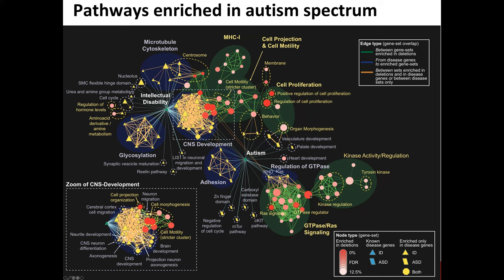Each circle here represents a pathway that's enriched in the autism cases compared to controls. The colors represent the false discovery rate, with lower values being more significant and colored more red. Green lines connect pathways that share genes — you can think of this as pathway crosstalk or redundancy in the pathway databases. All these circles represent pathways that were more enriched in autism cases compared to controls, and there were a lot of interesting pathways — many more information than we had from just looking at individual genes. A number of these pathways were not previously known to be connected to autism.